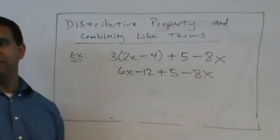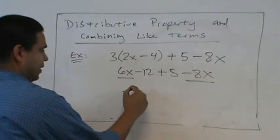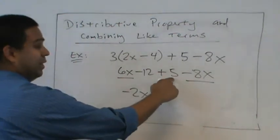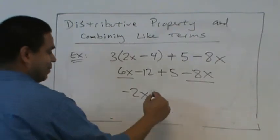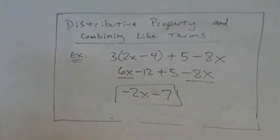Now we look for our like terms. What are the like terms? Six X and minus eight X. So that's a negative two X. And negative 12 plus five. Minus seven. That's it. Done.